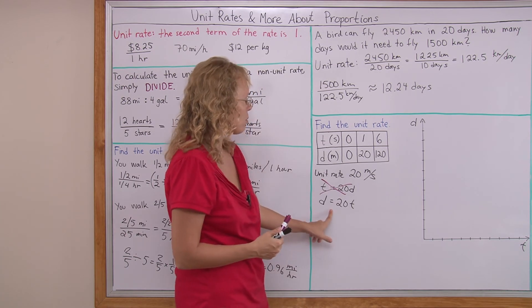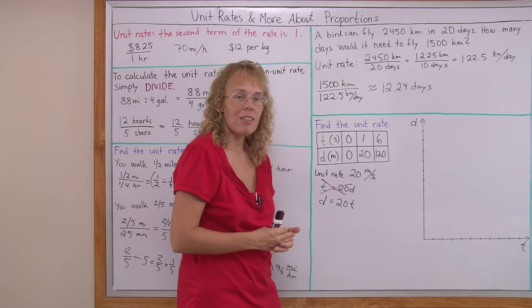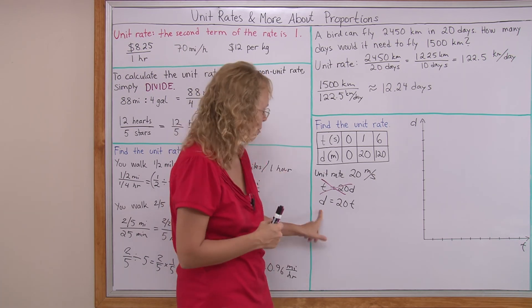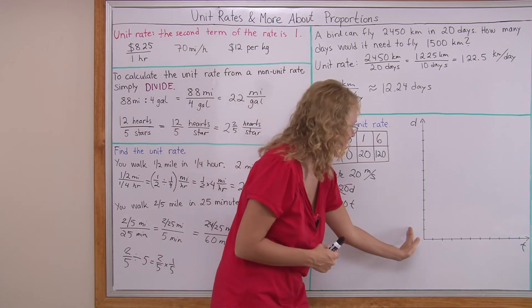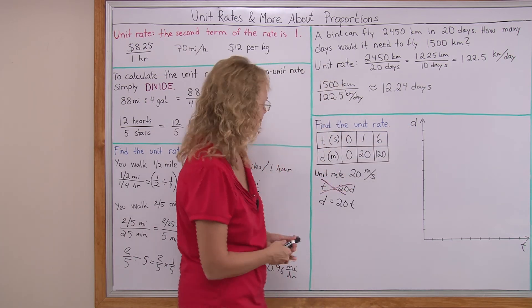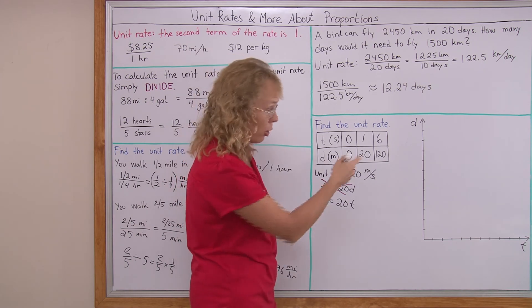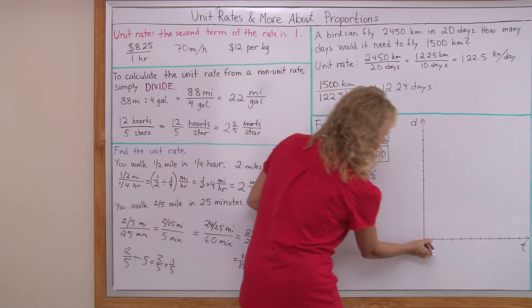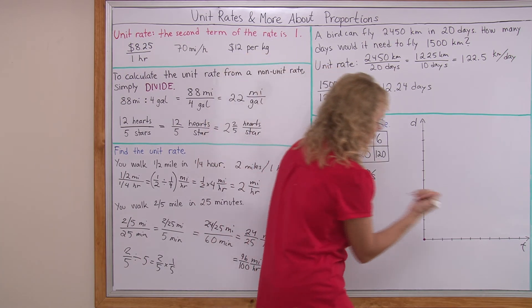It is this one, d equals 20 t. Just like if you're familiar with plotting graphs with the y and x, you always have y equals something x. So here the vertical axis d equals something t. That's our equation. And now we're going to plot it. I need two points to plot it, right? Origin is one, 0, 0. And then I need to choose a scale too for the axis. So 1, 2, 3 would work here.